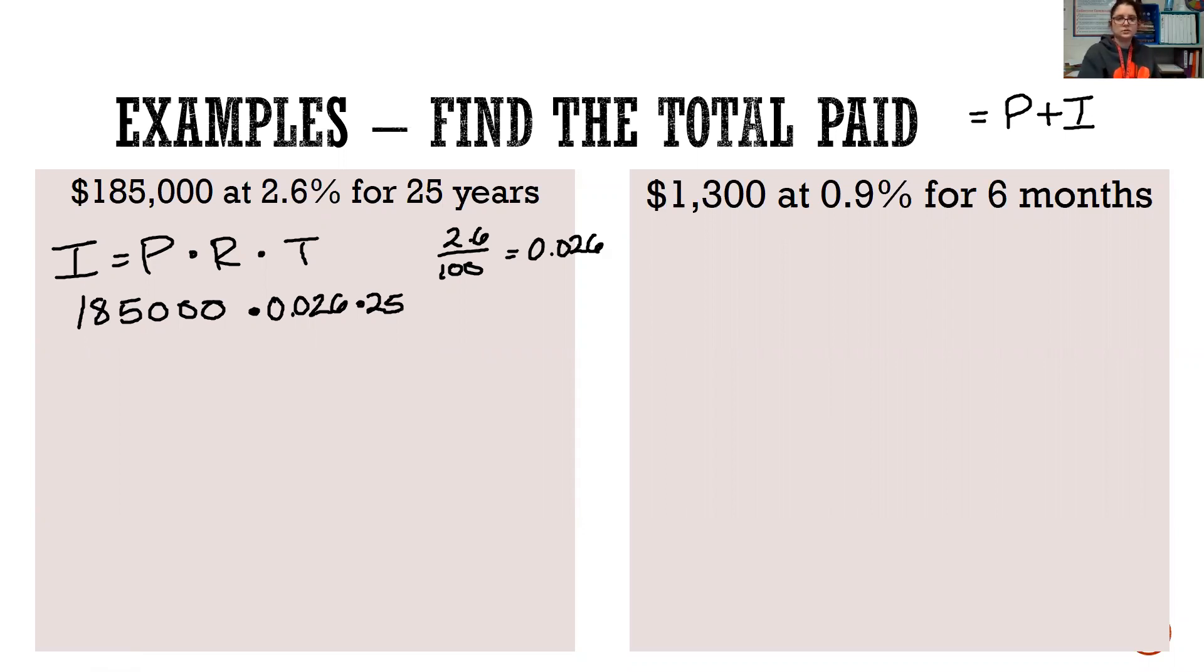$185,000 times 0.026 times 25. So your total interest that will collect on this over 25 years, your I equals $120,250.